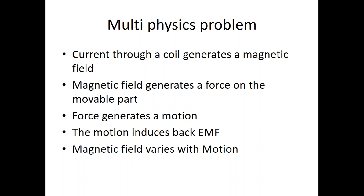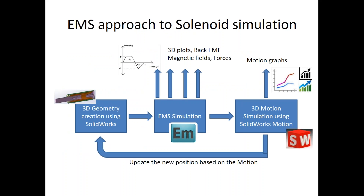This motion cuts a ferromagnetic substance through a magnetic field, cutting the magnetic flux lines and inducing a back EMF. Also, because there is movement, the magnetic field is not constant — it varies with time. You would need a program that takes care of all of these physics to accurately simulate and predict the motion of a solenoid, requiring treatment involving more than one type of physics.